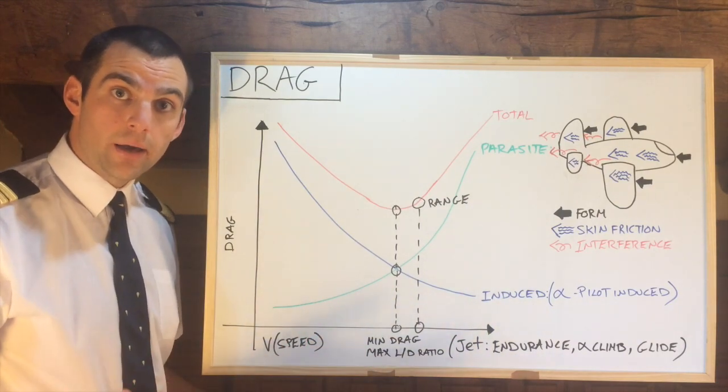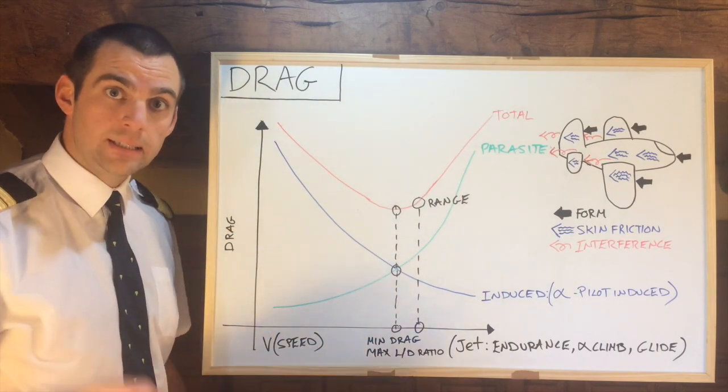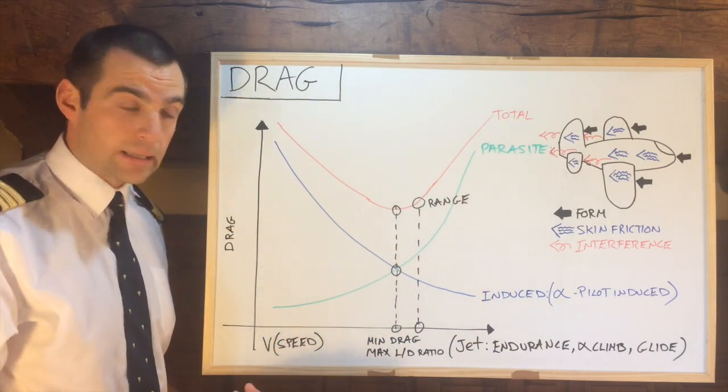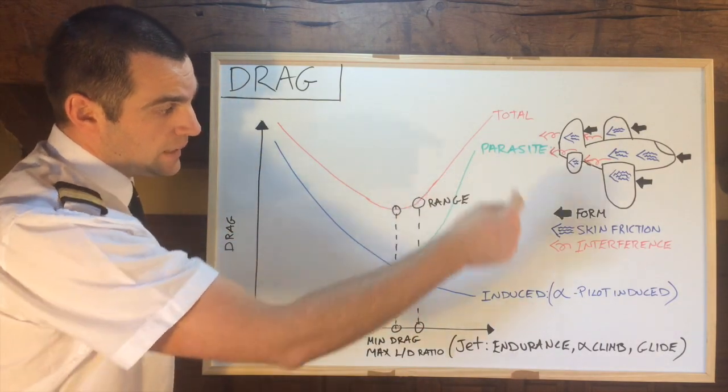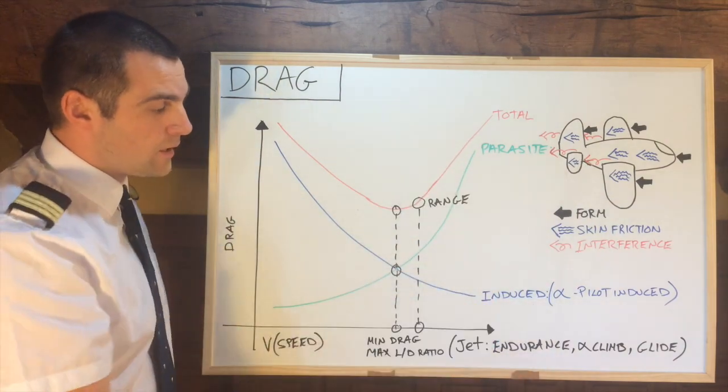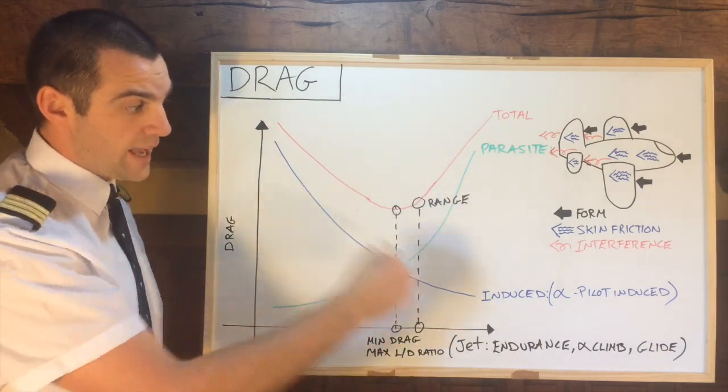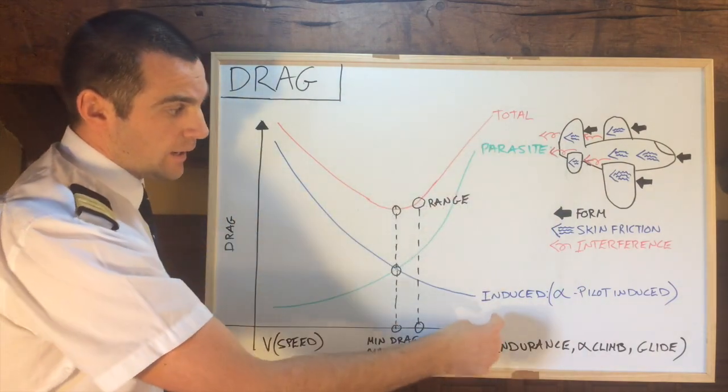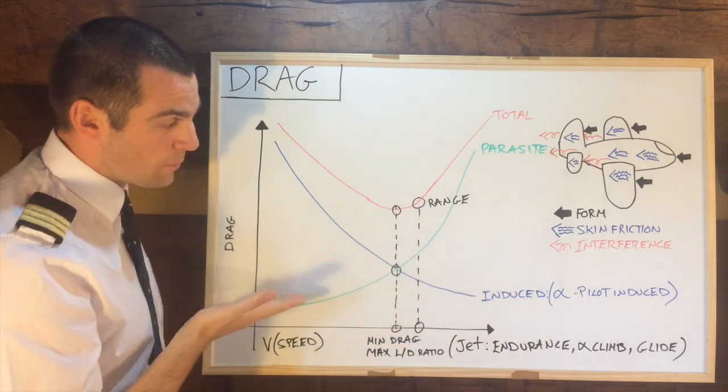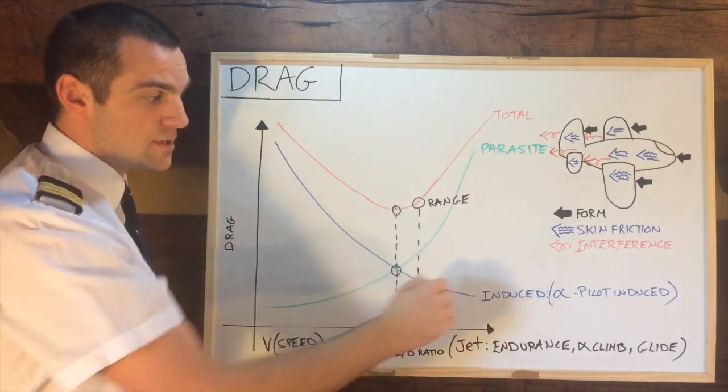Now you all know the number pi, 3.14, etc. That's the way I remember this graph, weirdly enough, because I remember pi, parasite-induced, in that order from high to low. So when I need to remember this graph, I draw the graph, I draw my X in, and I just write pi, parasite and induced, so I know my parasite is increasing, my induced is decreasing with speed.